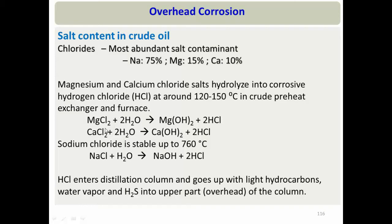Sodium chloride is the most stable and does not hydrolyze up to 760°C. So only magnesium chloride and calcium chloride hydrolyze to produce HCl. This HCl enters the distillation column, rises with lighter hydrocarbons and water vapors, exits from the top of the column, and enters the overhead section.